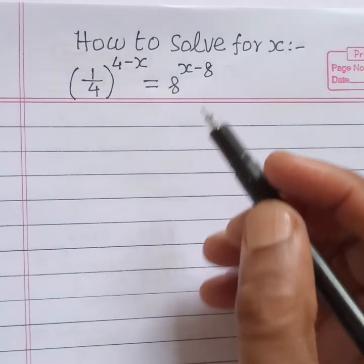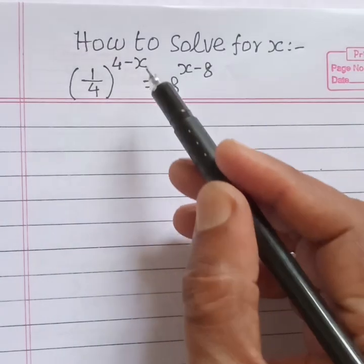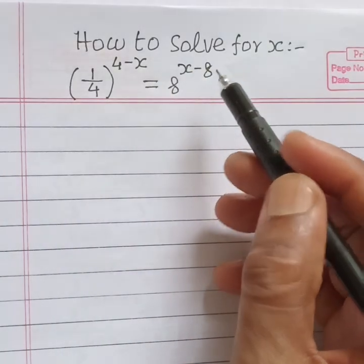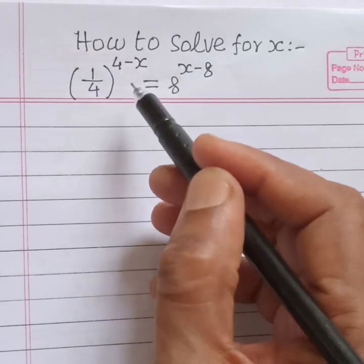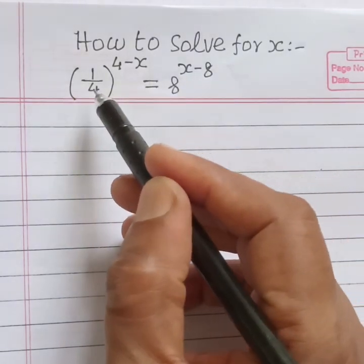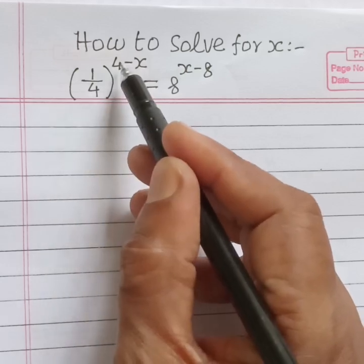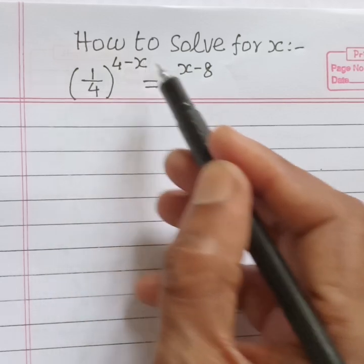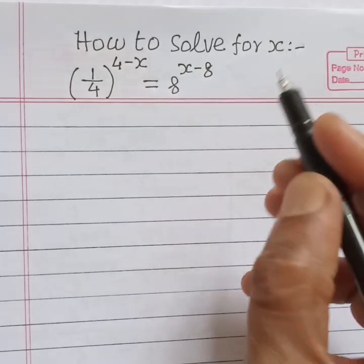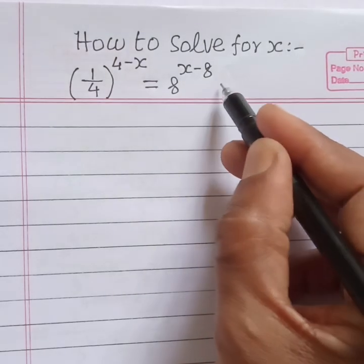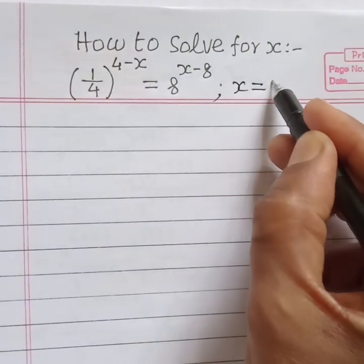Hello my friends, welcome back. We are going to solve this exponential equation. The equation is (1/4) to the power (4 minus x) is equal to 8 to the power (x minus 8). What is the value of x?